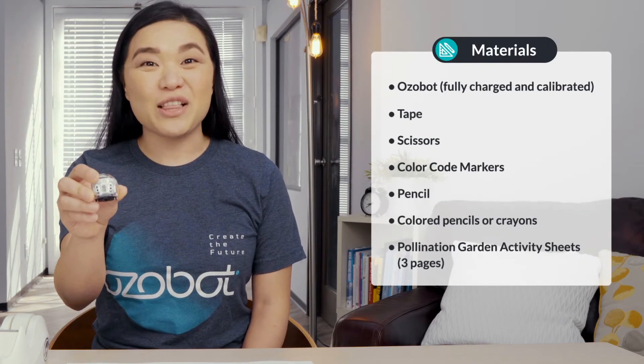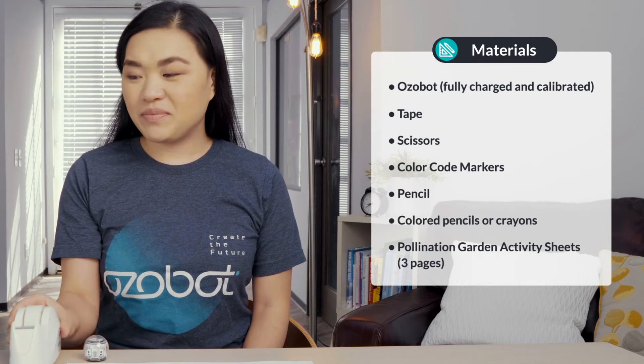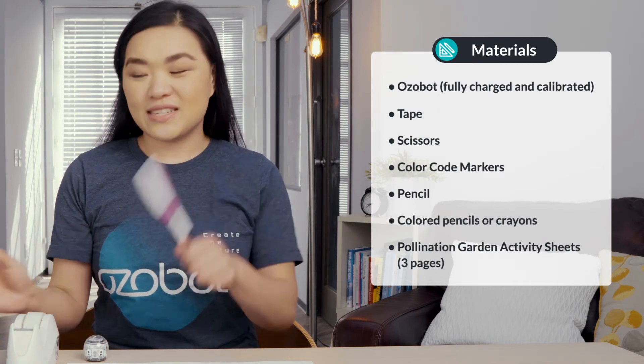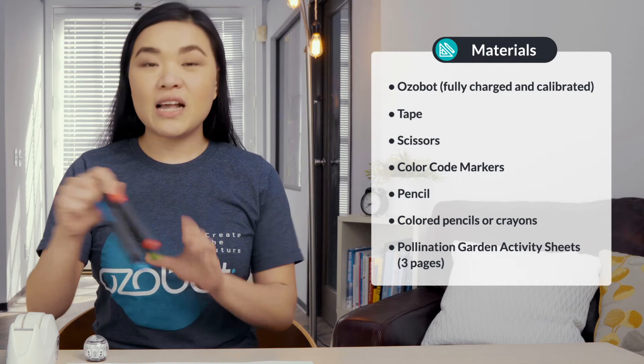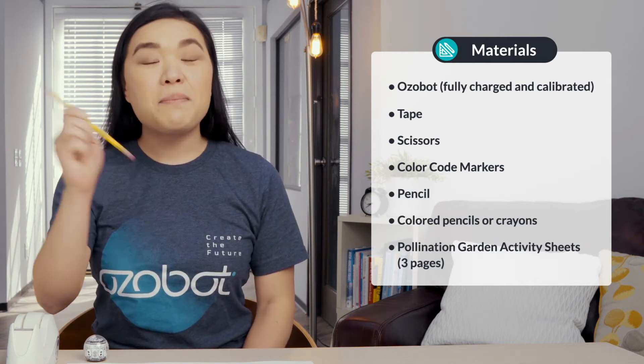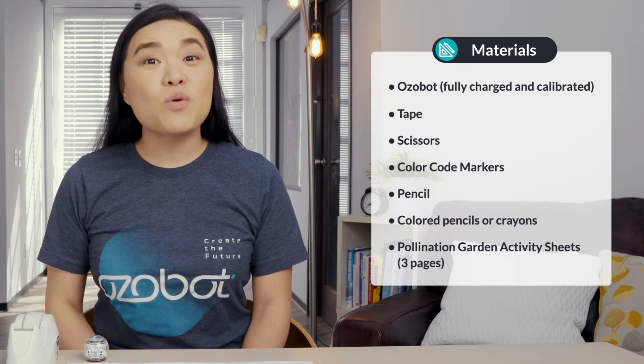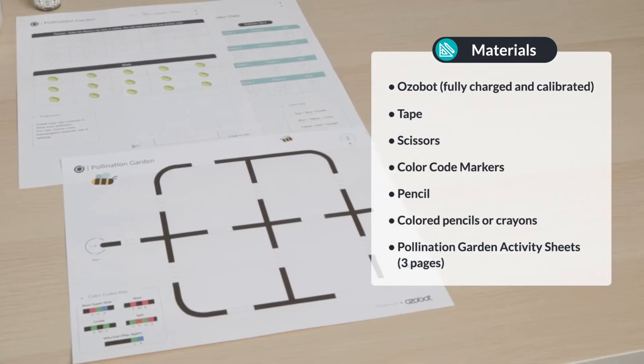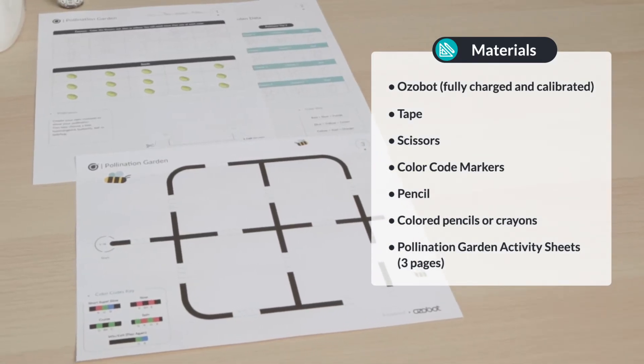For today's lesson you will need an Ozobot fully charged and calibrated, tape, scissors, color code markers, a pencil, colored pencils or crayons, and all three pages of your pollination garden activity sheets.